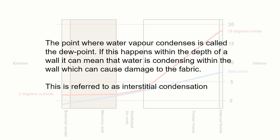If that happens within the depth of a wall, it can mean that water is condensing within the wall, which can damage the fabric. We want to avoid that—we want to get to a point where the dew point does not meet the temperature line within the depth of the wall.